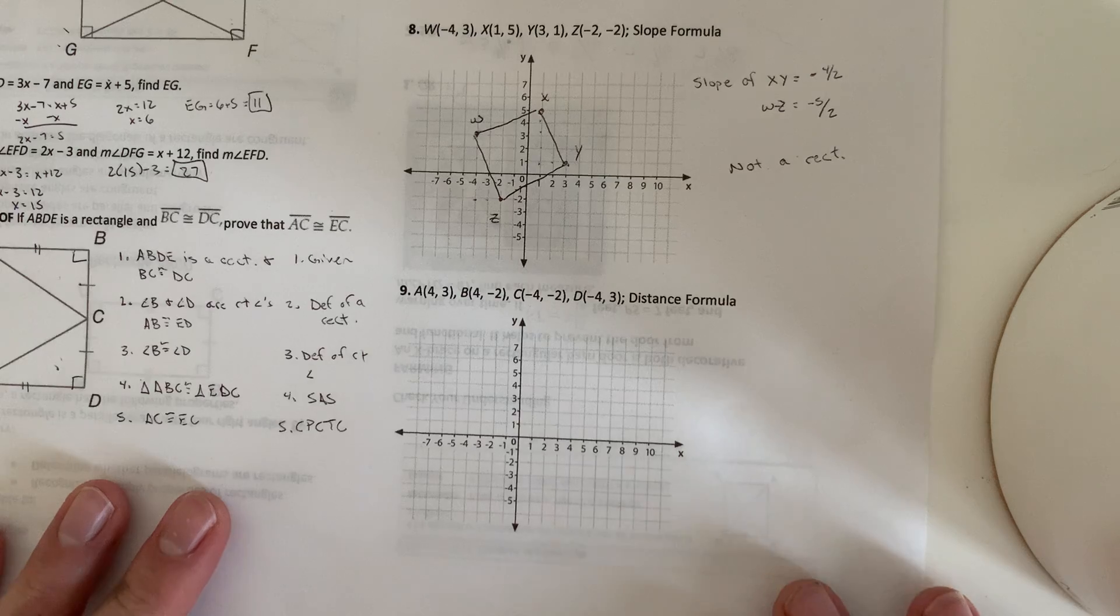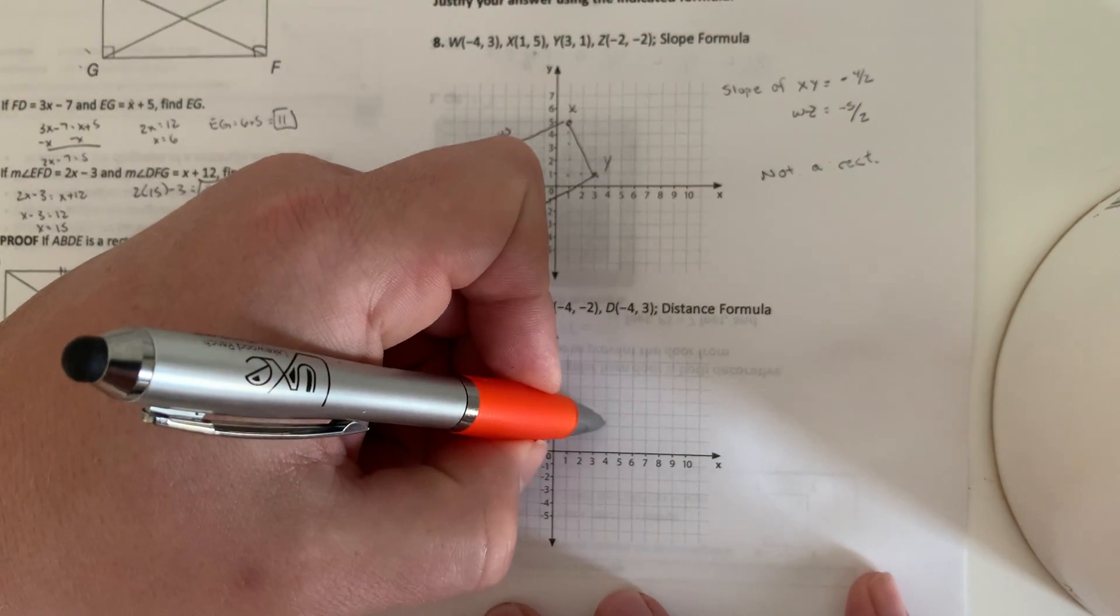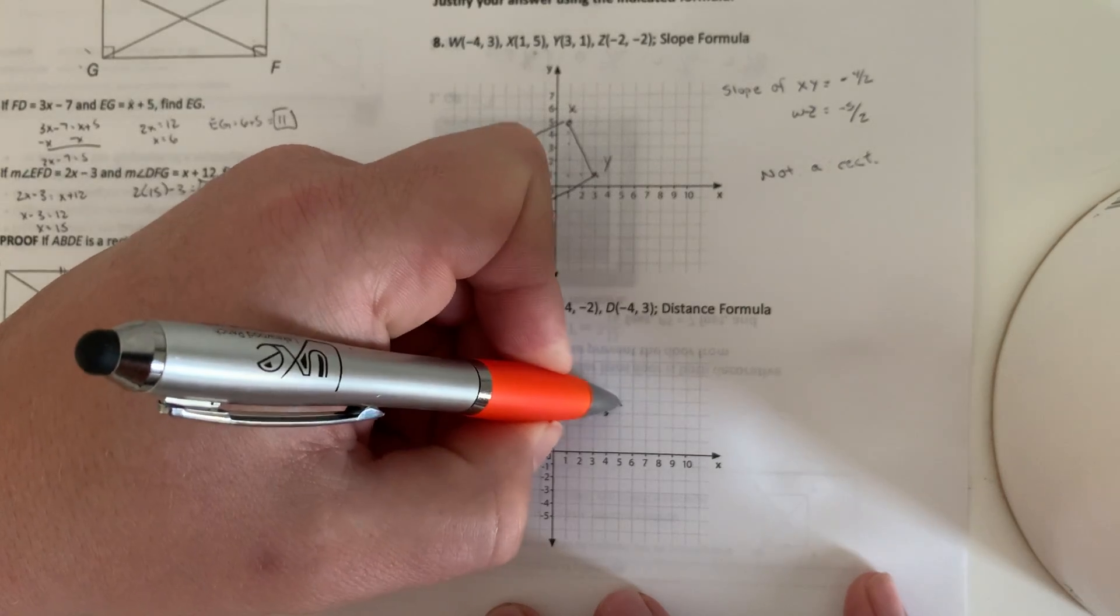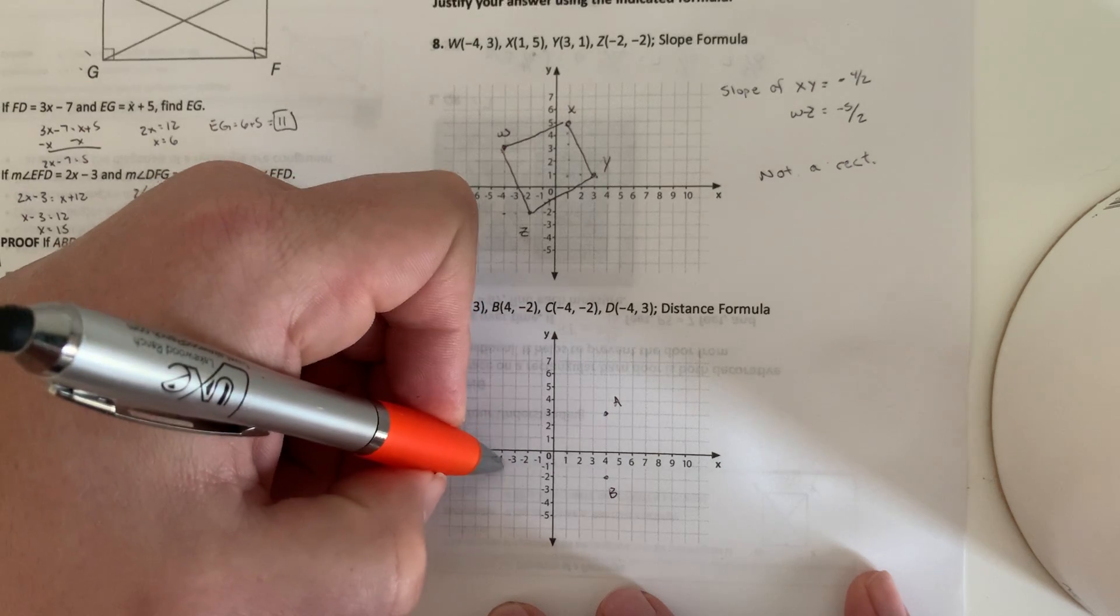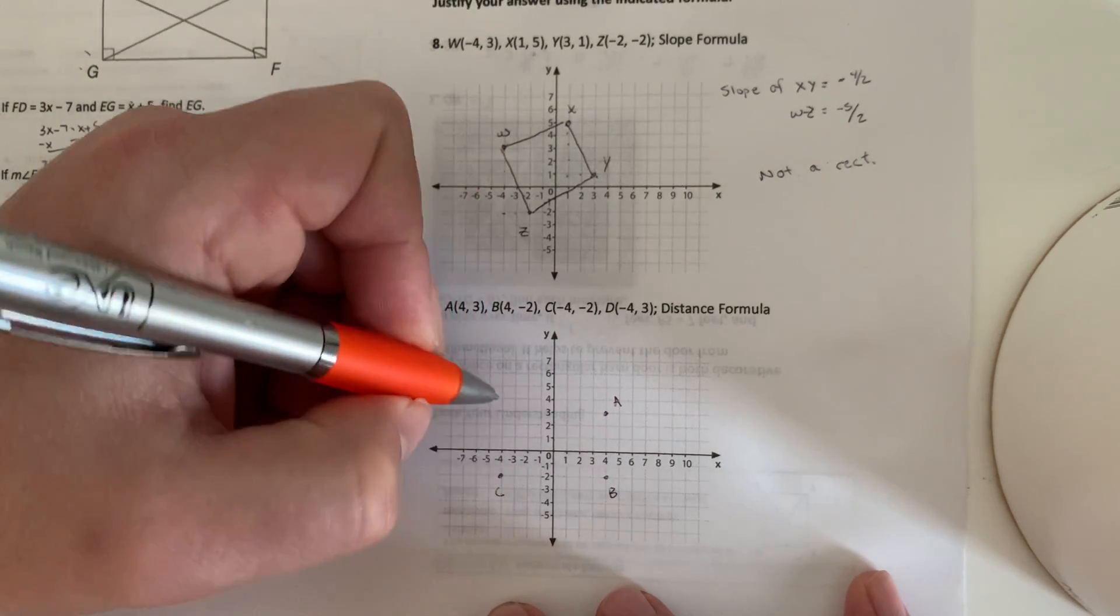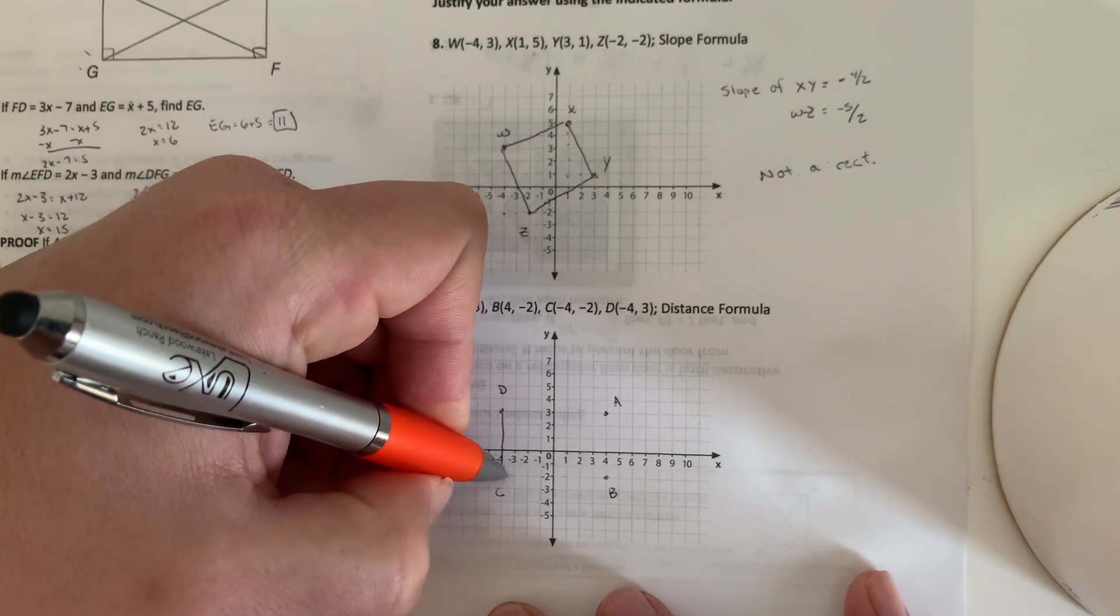So now we're going to do the same thing down here. A is at 4, 3. B is at 4, negative 2. C is at negative 4, negative 2. And D is at negative 4, 3. So here's our rectangle.